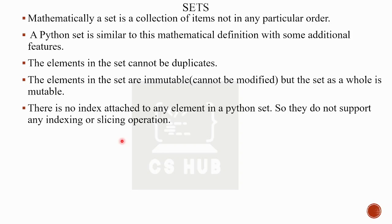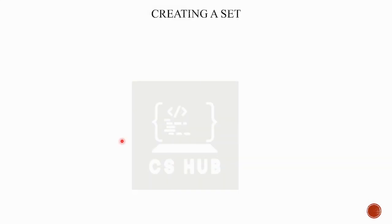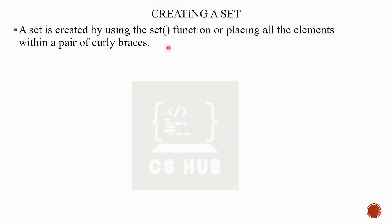Even in dictionary there is no order, and there is no order in the set either. How to create a set: a set is created using the set() function, or by placing all elements within a pair of curly braces. We have two methods. Comparing with other types: String uses quotes, List uses square brackets separated by comma, Tuple uses parentheses separated by comma, Dictionary uses curly brackets with key-colon-value pairs. Set uses curly brackets with comma-separated values.